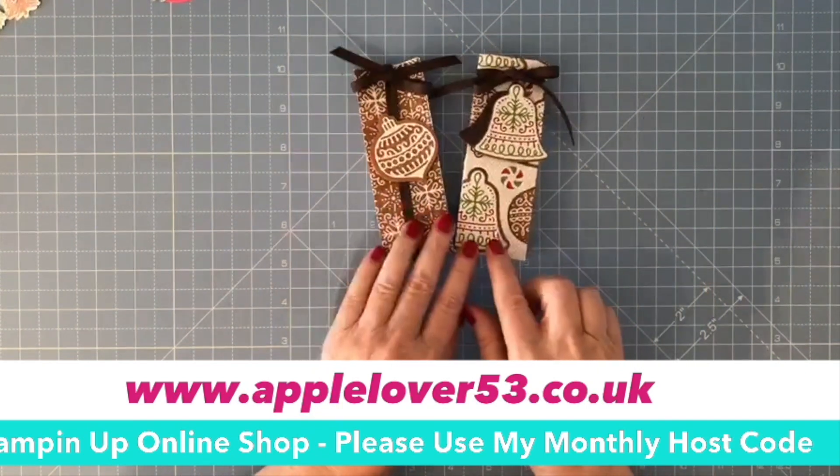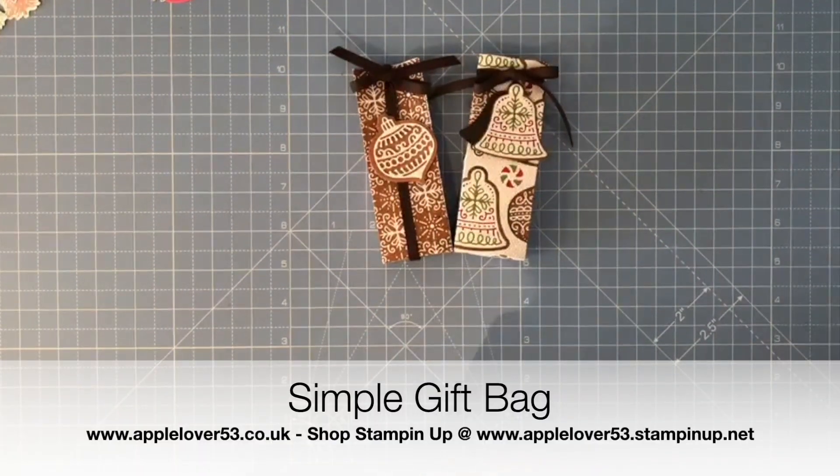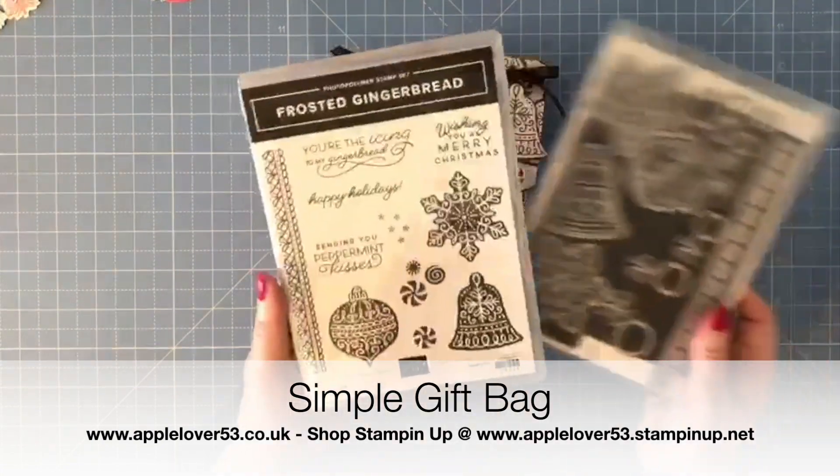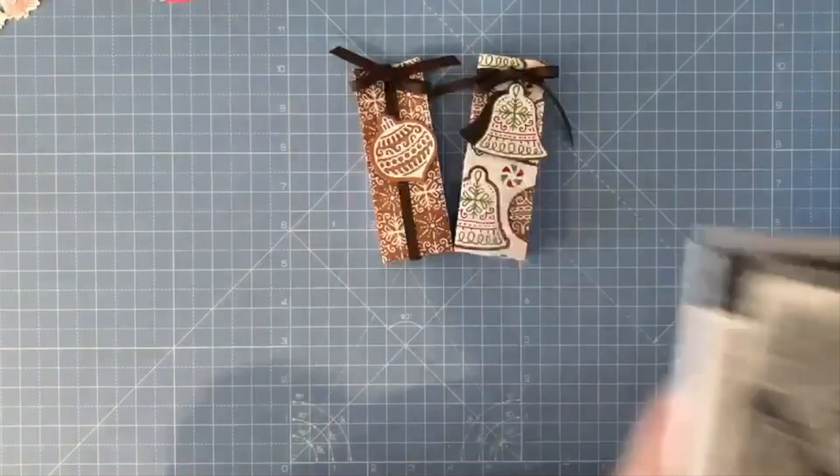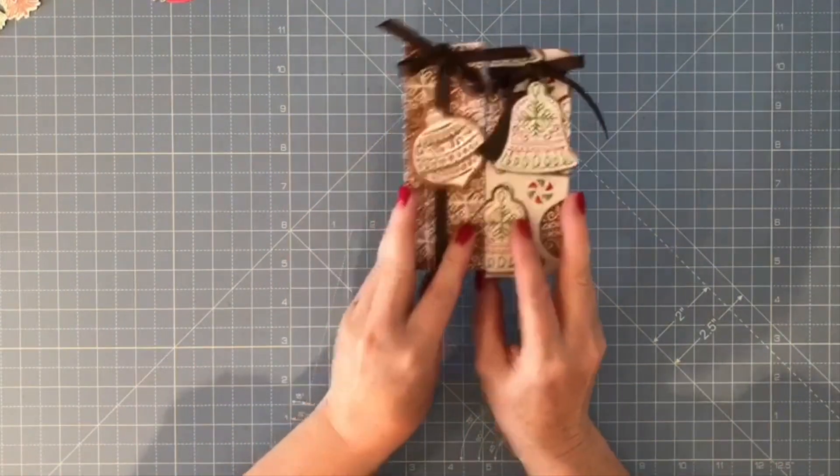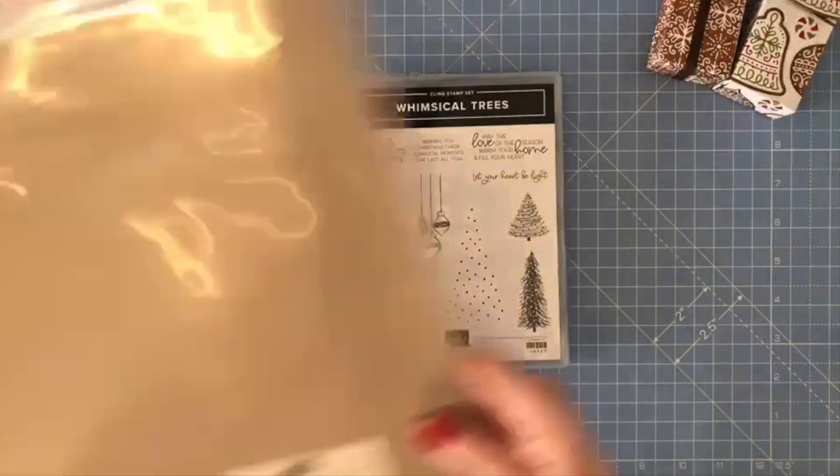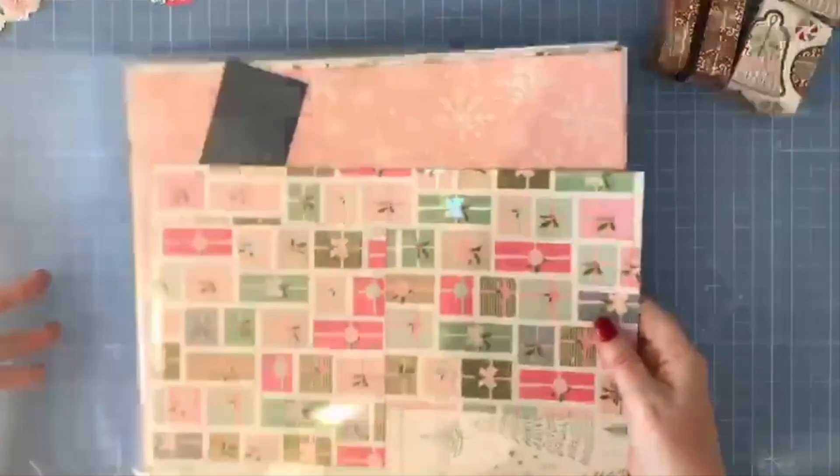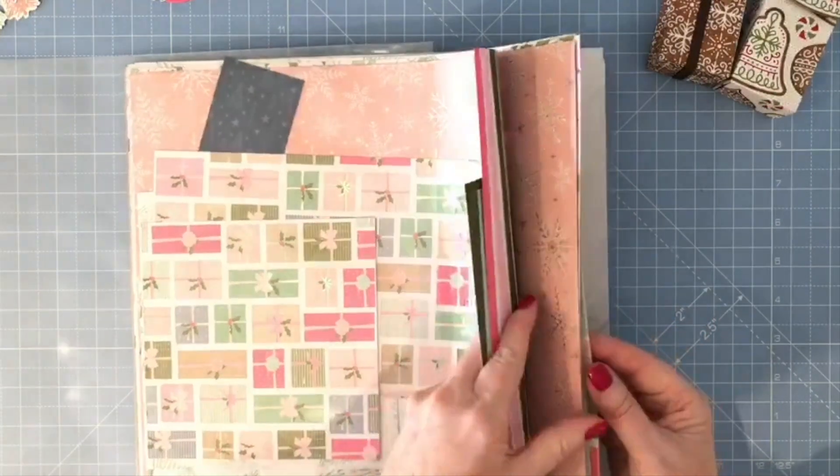The two that you can see here have been made using the Gingerbread and Peppermint suite of products, which includes the Frosted Gingerbread stamps and the Gingerbread dies. But for today's video I'm going to be making the project using Whimsical Trees and the accompanying designer series paper, which is Whimsy and Wonder. The colors are Mint Macaron, Polished Pink, Magenta Madness, Misty Moonlight, and Iridescent.